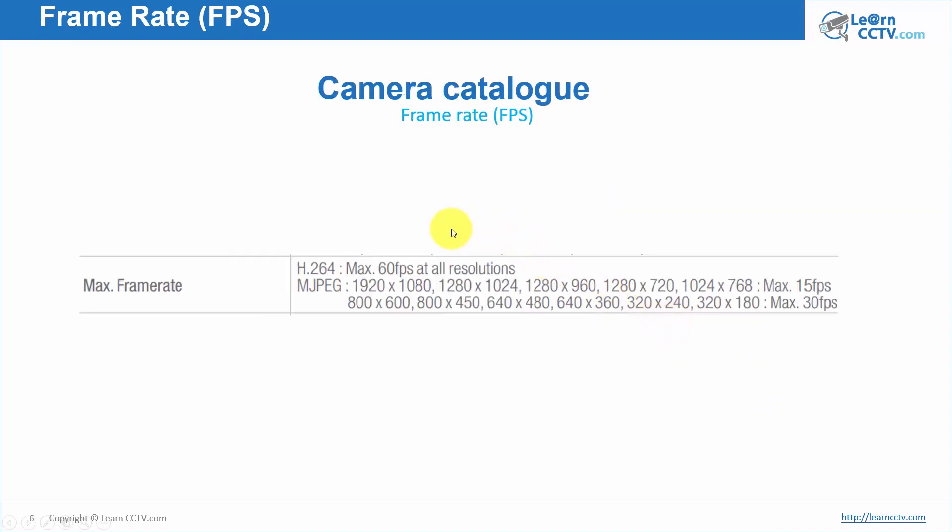Here is an example of a camera catalog. When you have the information here, you need to pay attention to some details. Here, for example, you see the information that the camera works with 60 frames per second, but when you're using the H264 codec, or the compressor, for all resolutions.